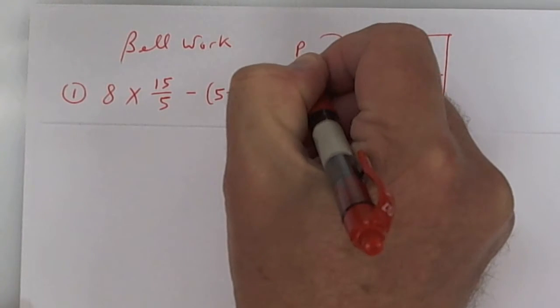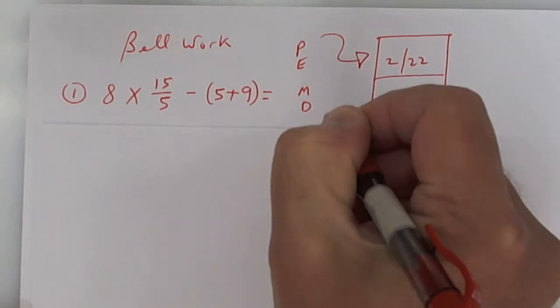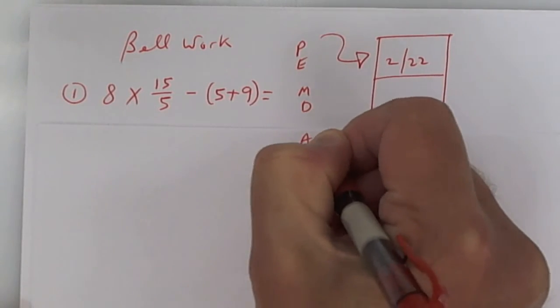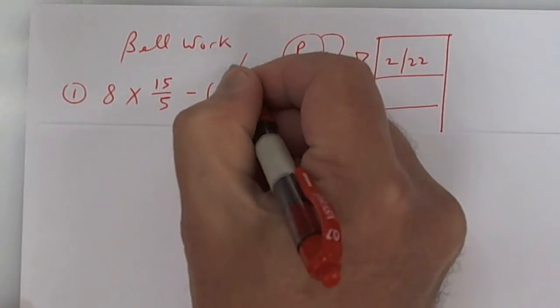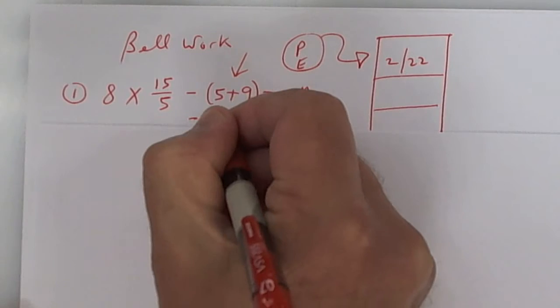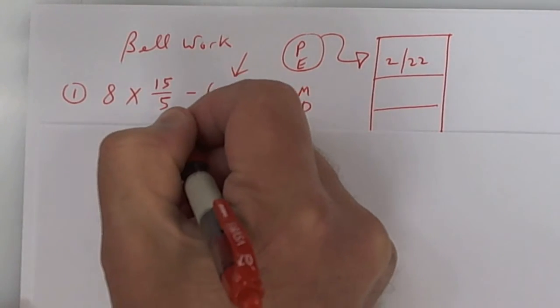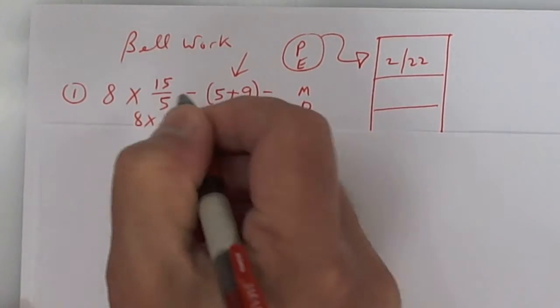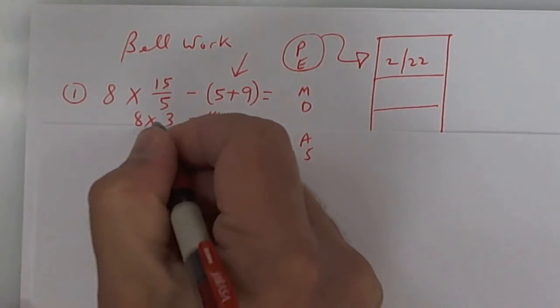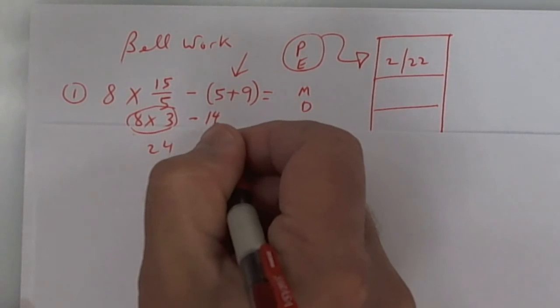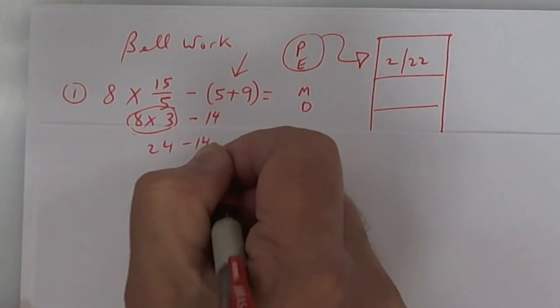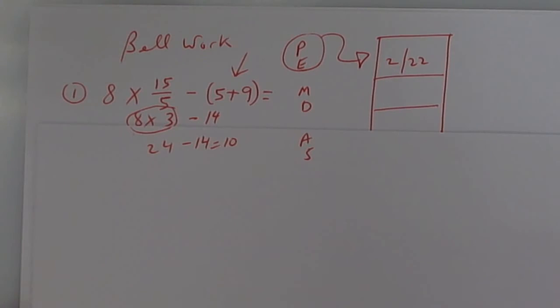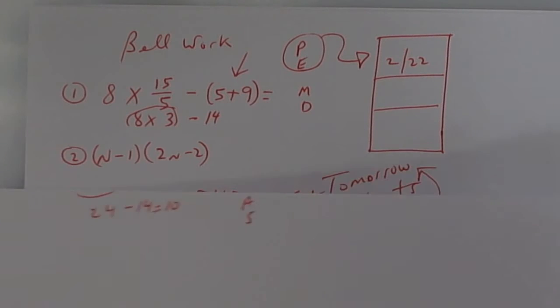So please excuse my dear Aunt Sally. These come first, here are parentheses, so you're going to put minus 14. 15 divided by 5 is 3, and so you're going to have 8 times 3 is 24. Make sure you multiply before you subtract, so it's 24 minus 14 equals 10.